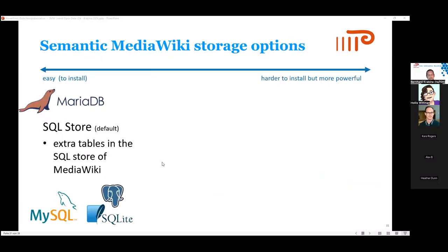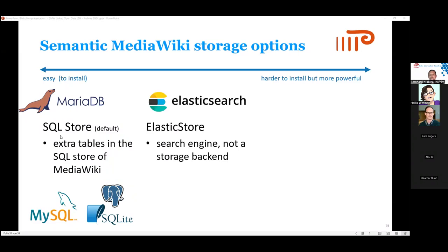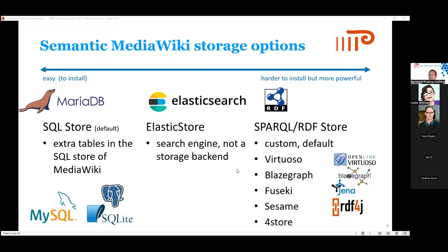Some more words on storage options. You typically have the standard Media Wiki SQL store — Semantic Media Wiki just stores additional tables in your MySQL or MariaDB database. You can also have Semantic Media Wiki use ElasticSearch, which is not an alternative but an addition for the search backend. And you can use a triple store — a SPARQL or RDF store — with several connectors available, where Semantic Media Wiki then stores the data in the triple store instead of only the SQL store.